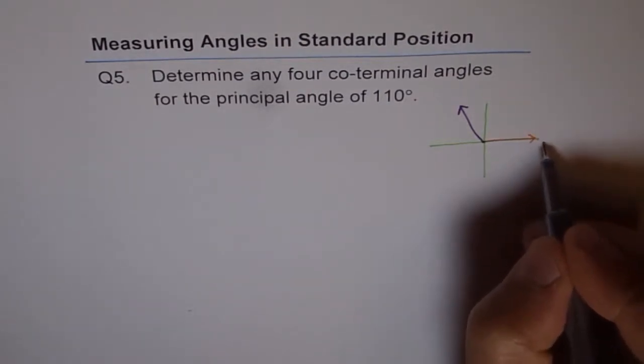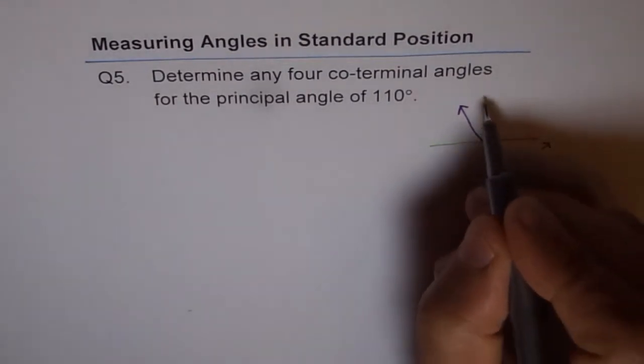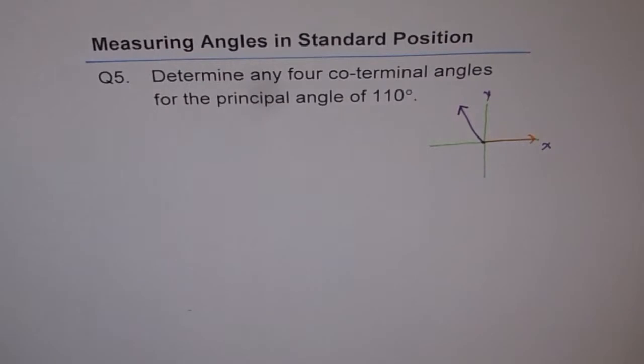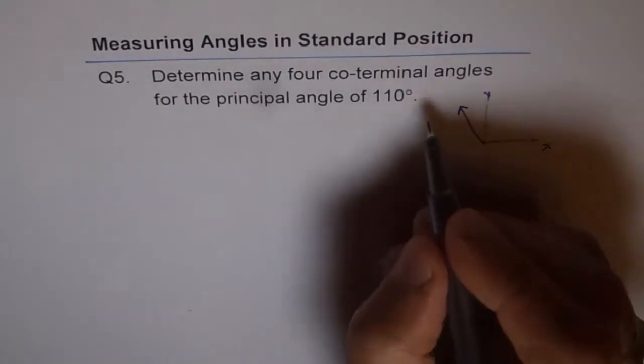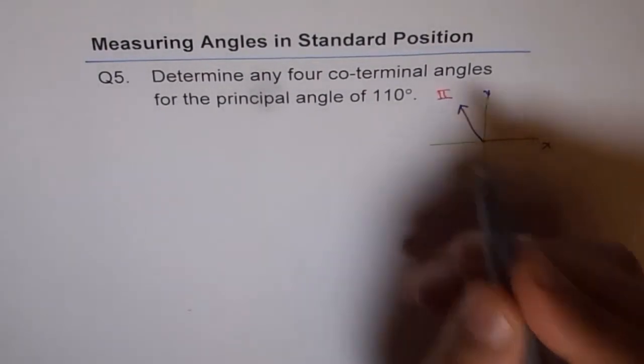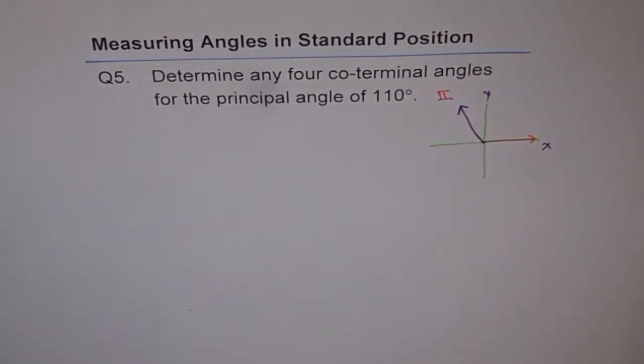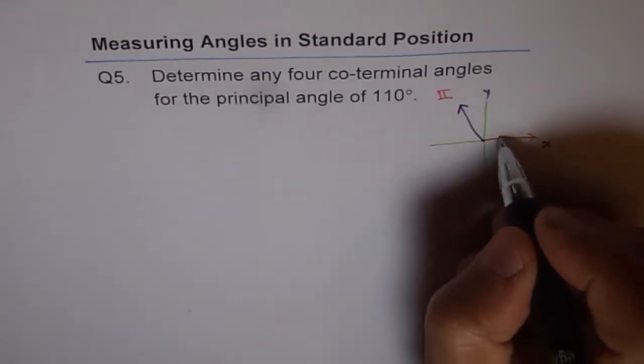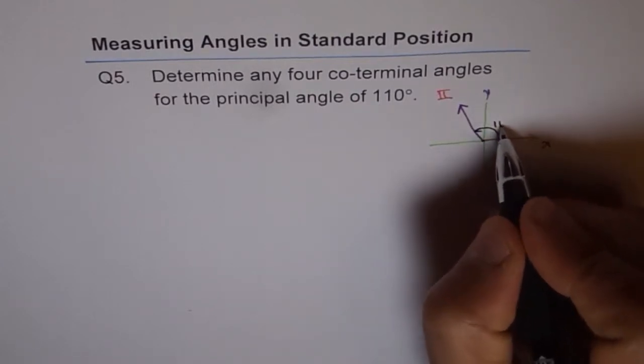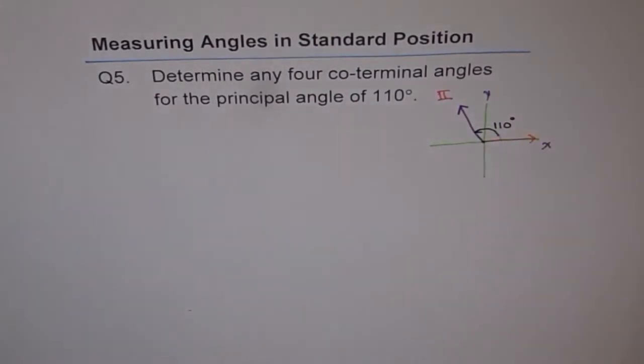This is my initial arm along the x-axis and the terminal arm is in quadrant 2. Now we have to find the co-terminal angles for the given principal angle. That is the principal angle, 110 degrees. How can you find co-terminal angles for this?